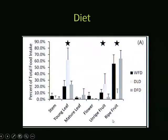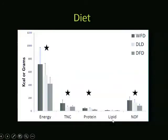I followed two groups of howler monkeys in southeastern Mexico for 10 months, sampling gut microbial communities every two weeks. There were three main diet periods: wet fruit-dominated, dry leaf-dominated, and dry fruit-dominated. These howler monkeys go from consuming mostly fruits to mostly young leaves and back to mostly fruits. In terms of actual nutritional content, there's a decrease in energy intake as well as non-structural carbohydrates, protein, and fiber across these seasons.